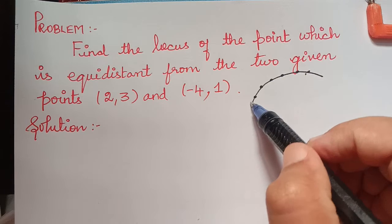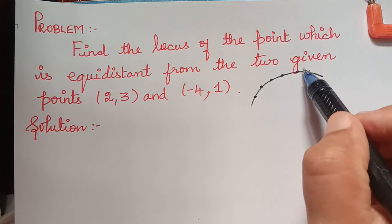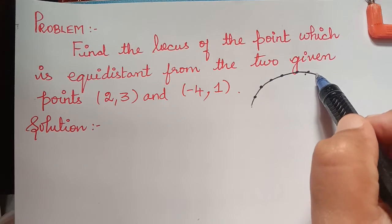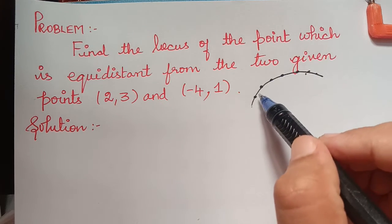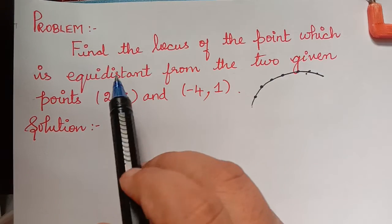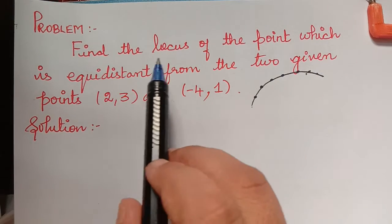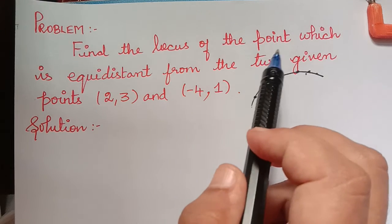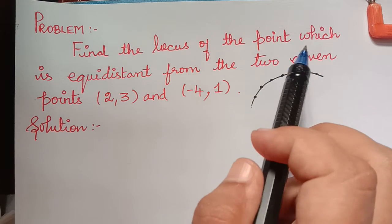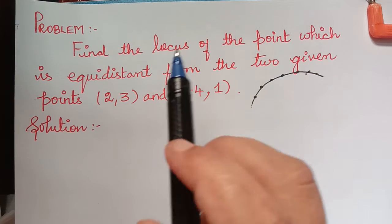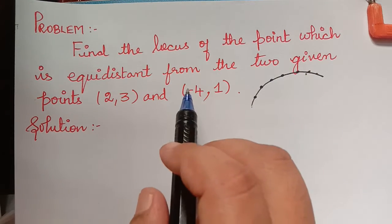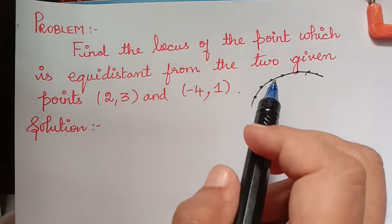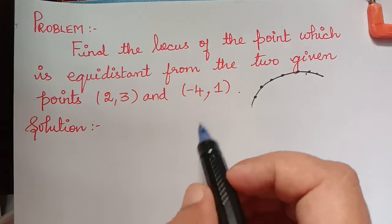This curve is called the locus of a point. Now in this question, they are asking us to find the locus of the point which is equidistant from the two given points.